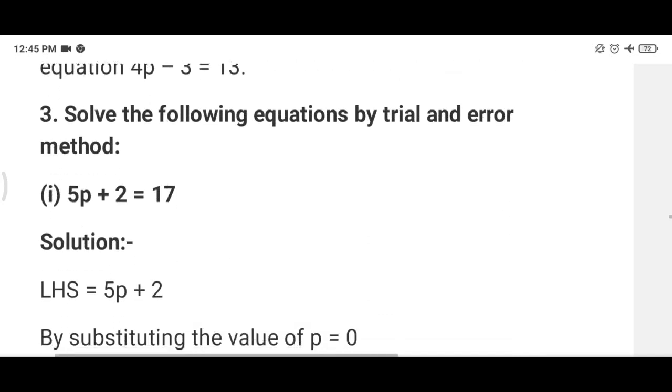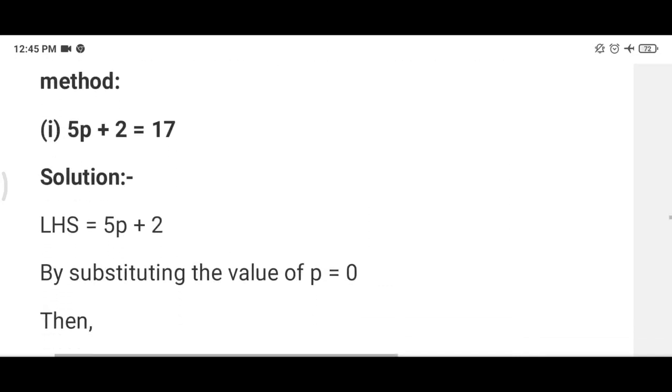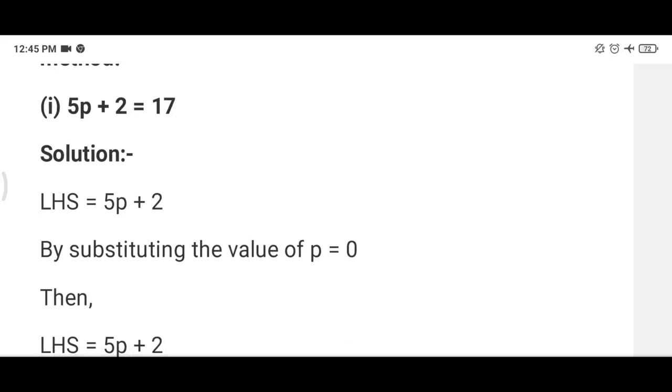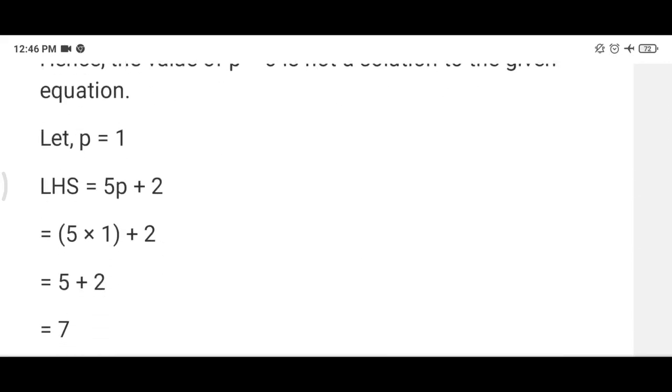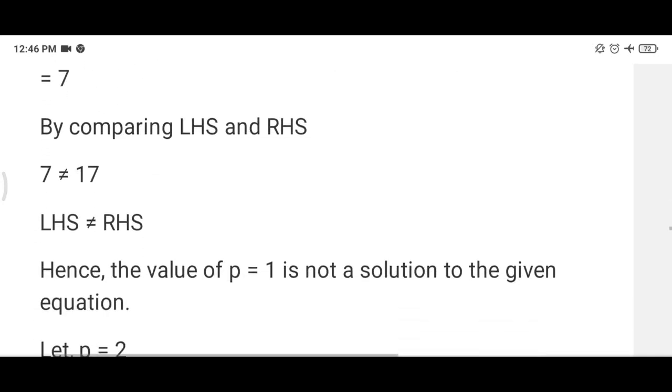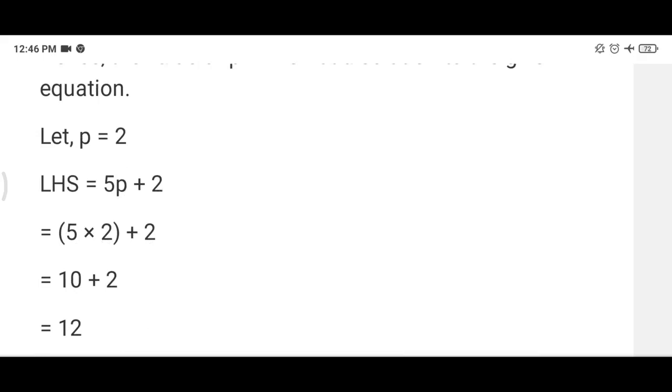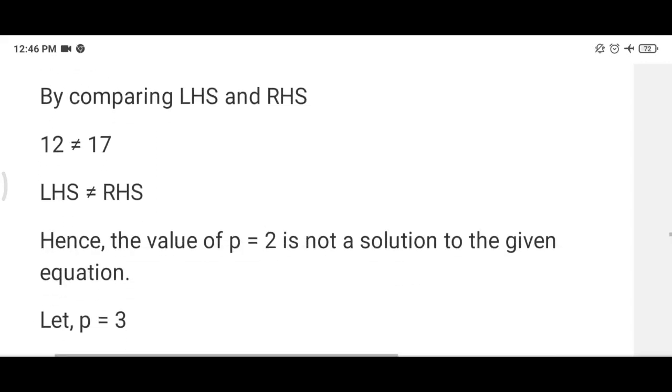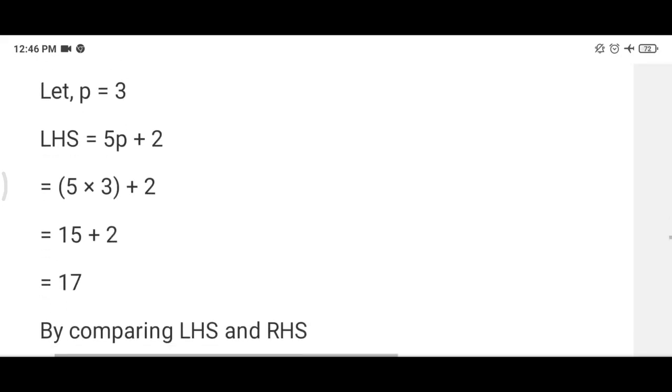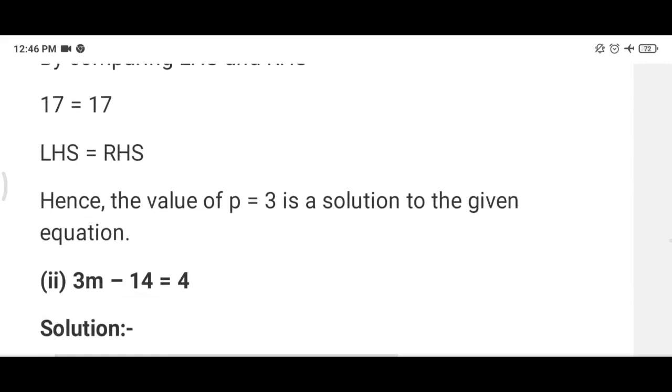Now in third part, solve the following equation by the trial and error method. So trial and error method means we put values one by one. Start with 0, then 1, then 2, then 3. Whichever value satisfies the equation is called the solution. First we put 5p plus 2. p equals 0, then answer is 2 which is not equals to 17. Then p equals 1, 5 into 1 plus 2 is 7. Again not equals to 17. Then p equals 2, 5 into 2 plus 2 is 12. 12 is not equals to 17. Then p equals 3. 5 into 3 plus 2 is 17. Now 17 is equal to 17. Means p is equal to 3 is the solution of the equation.